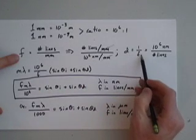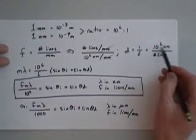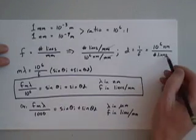Then d is the reciprocal of frequency, so we just take this and turn it over. It's a million nanometers over the frequency, the number of lines per millimeter that the grating was sold as.